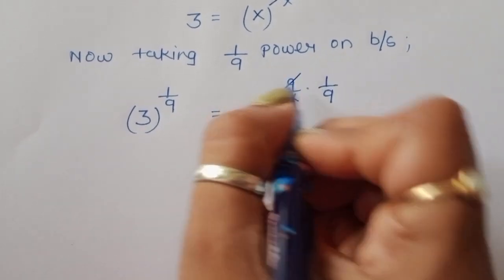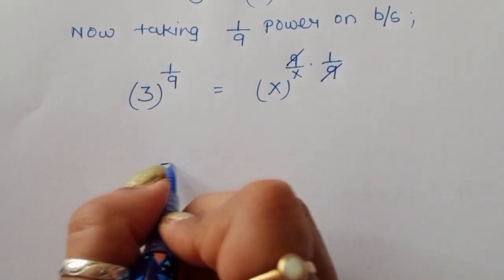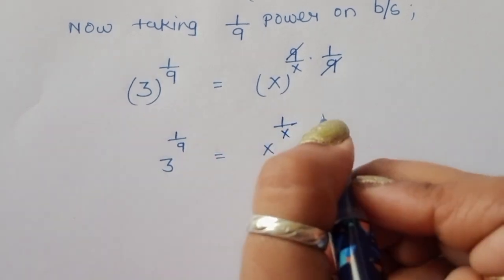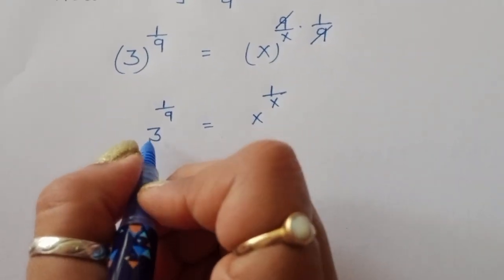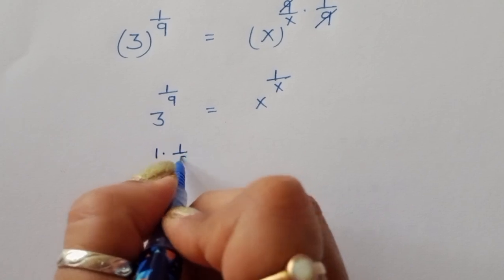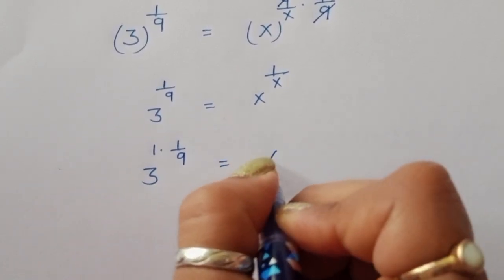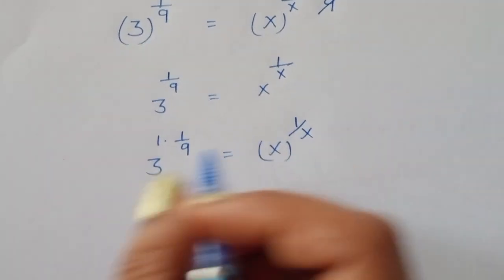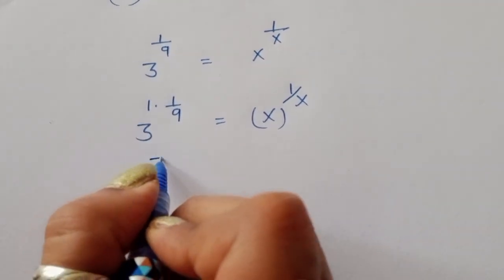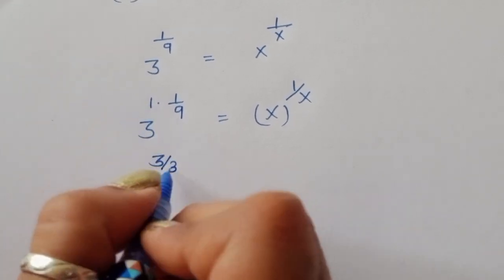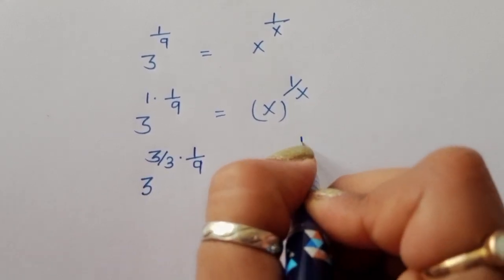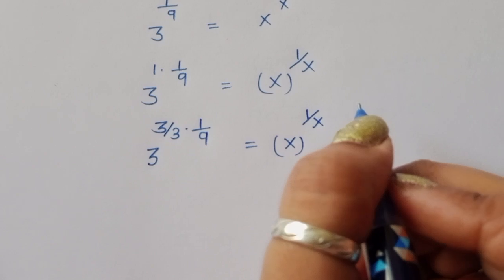Taking 1 upon 9 power on both sides: 3 power 1 upon 9 is equal to x power 9 upon x times 1 upon 9. The 9 cancels, so we get 3 power 1 upon 9 is equal to x power 1 upon x.